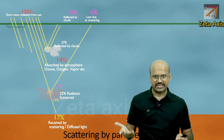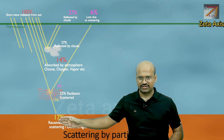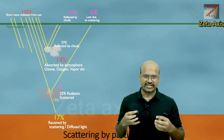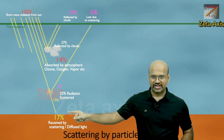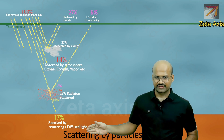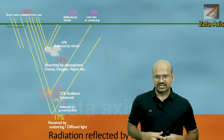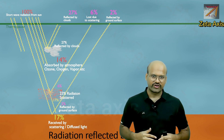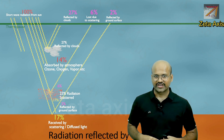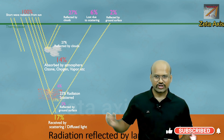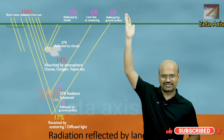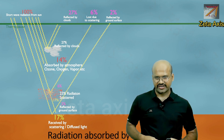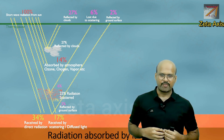The remaining 17% of the scattered solar radiation is directed towards Earth and absorbed by Earth's surface as diffused light. Additionally, 2% of the incoming solar radiation that reaches the surface is reflected back to space by the ground — from regions of water or ice. The rest of the radiation that reaches Earth's surface is directly absorbed.